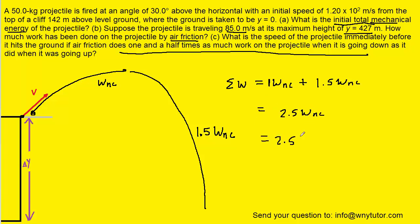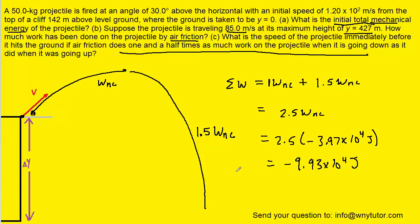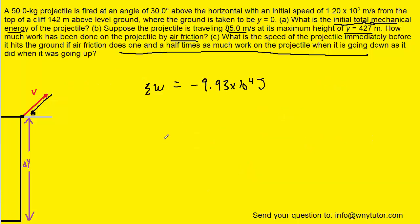We take the amount of work just determined and multiply by 2.5. When we do that, we get negative 9.93 times 10 to the power of 4 joules. This is not our final answer yet, but this is the total amount of work being done on the projectile throughout its entire flight.